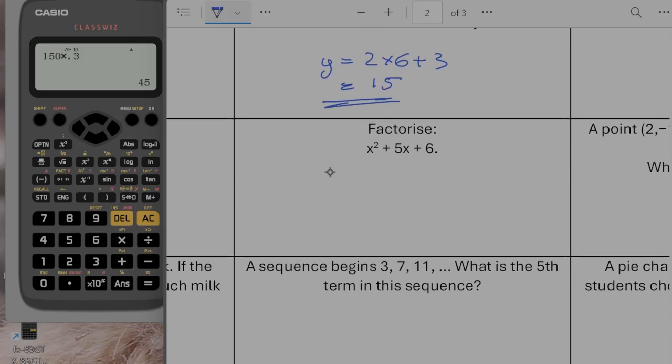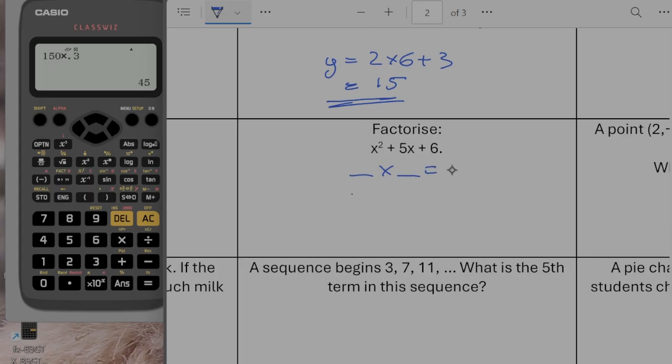Right. Factorize. So I'm looking for two numbers that multiply together to make 6 and that add together to make 5. So that's going to be 2 and 3. So x plus 2 and x plus 3.